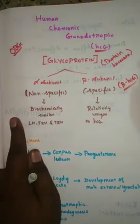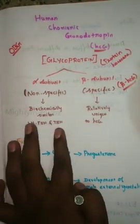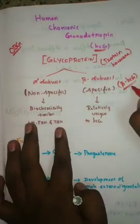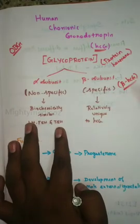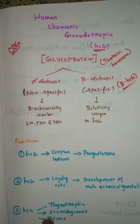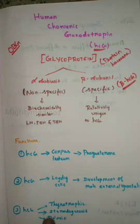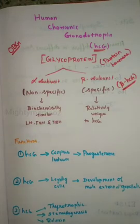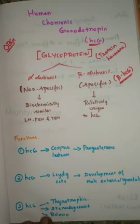Alpha HCG imitates LH, FSH, and TSH. Since the alpha subunit is shared, when we refer to HCG clinically we use the term beta HCG, as it is specific to this hormone.